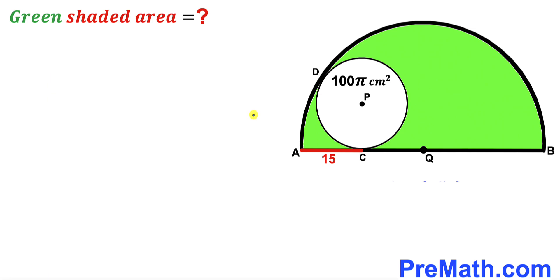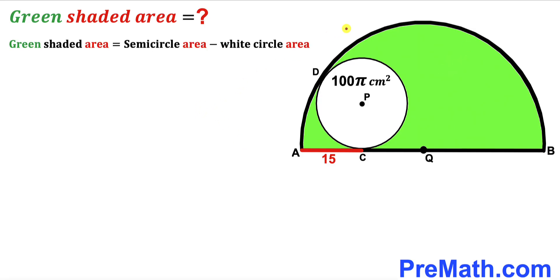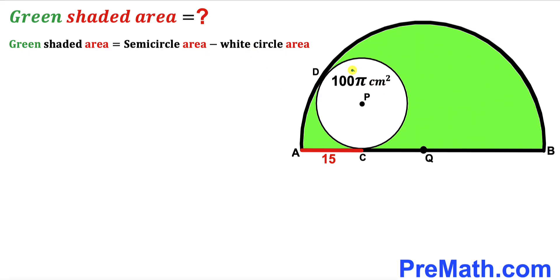Let's get started. To calculate the area of the green shaded region, we observe that the green shaded region area equals the big semicircle area minus the area of the white circle. We already know the white circle area is 100π, so our task now is to calculate the area of the semicircle.